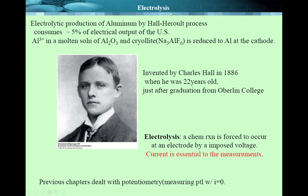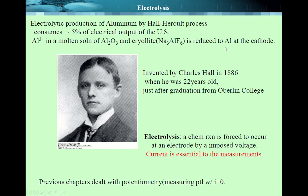The first topic is Electrolysis — in Korean, 전기분해. You apply voltage or current to perform the electrolysis. The best-known example is the electrolysis of water, which gives hydrogen and oxygen gases. At the anode, hydrogen gas is formed, and at the cathode, oxygen gas is formed, with a volume ratio of exactly two to one. Now let's consider the electrolytic production of aluminum by the Hall process.